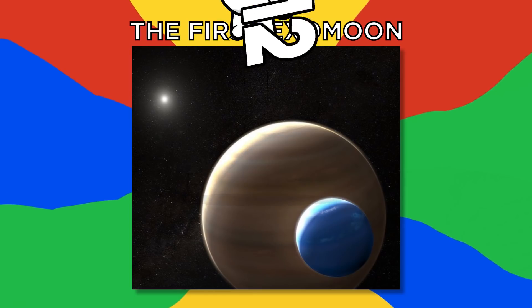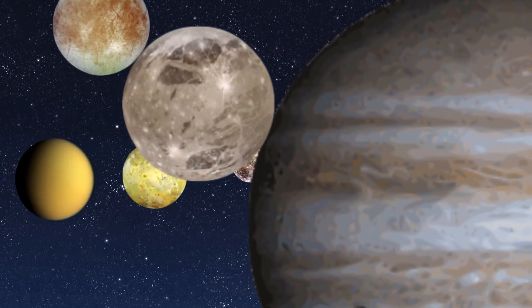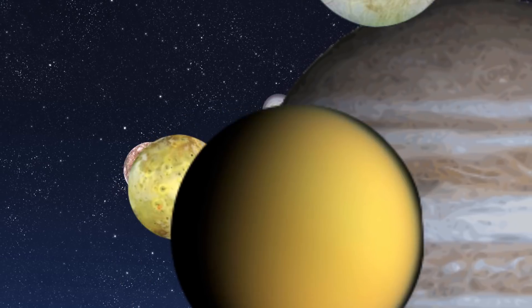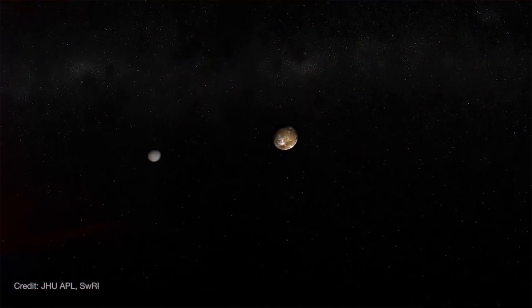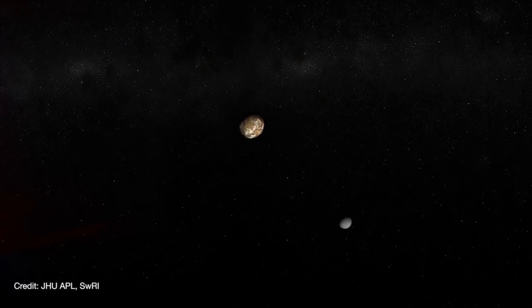Number 12, the first exomoon. Any natural space object that orbits a bigger astronomical body is a natural satellite. The Earth's moon, for example, is a satellite. But if the moon is orbiting a planet outside our solar system, it's an exomoon.